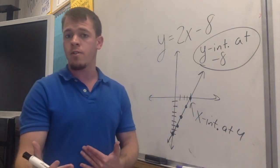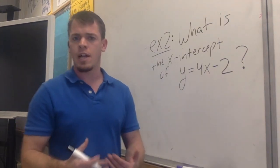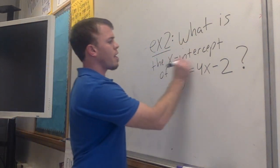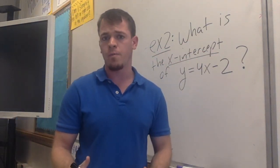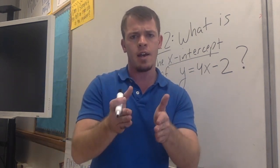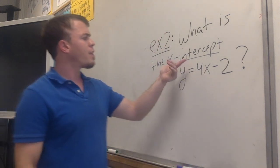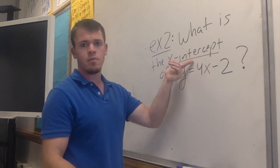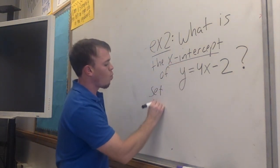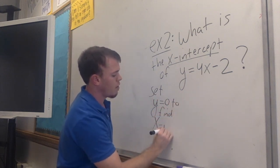This brings us to our second example. We want to know: what is the x-intercept of y equals 4x minus 2? Let's think back to our y-intercept — to get the y-intercept we had to set x equal to 0. So what do you think we would have to set equal to 0 to find the x-intercept? We'd have to set y equal to 0 to find the x-intercept.